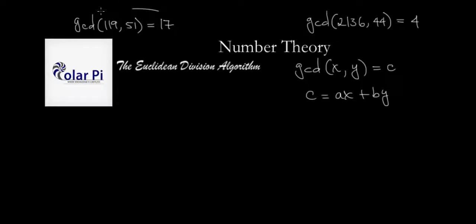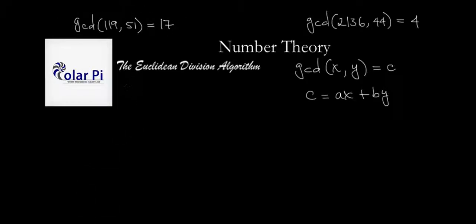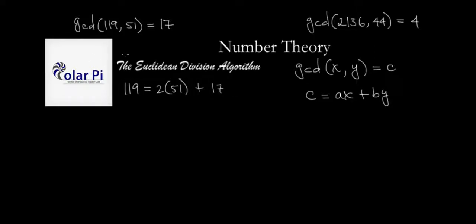To start the algorithm process, you need to write the larger of the two numbers with a quotient and a remainder. The way to do this is to divide the larger number by the smaller number and go from there.